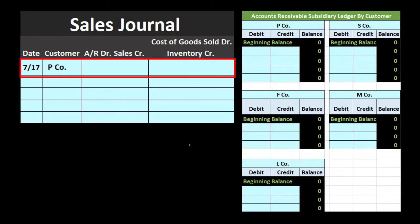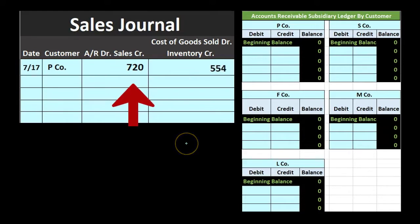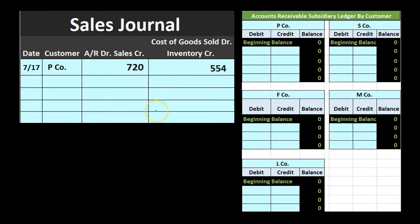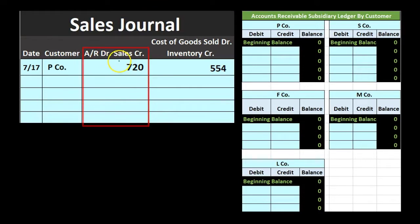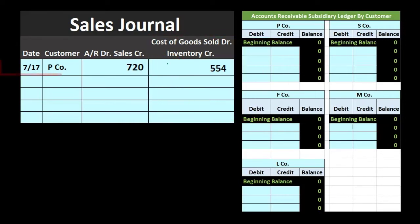On 7/17 we have customer P Company: sale 720, cost 554. Notice how much shorter this entry is compared to a full journal entry. If we wrote this out as a journal entry we would have to debit accounts receivable, credit sales — similar to a service company transaction — and then debit cost of goods sold and credit inventory for the cost of the goods sold. Here we just have one line item to do all of that.